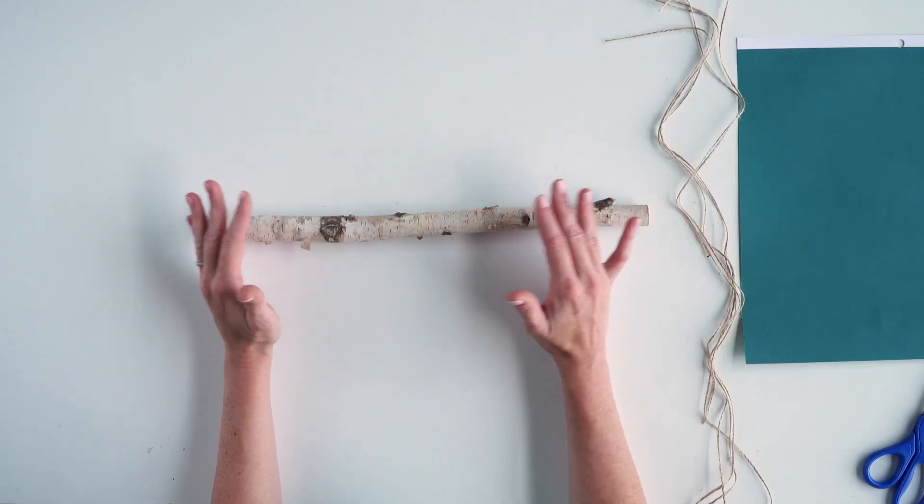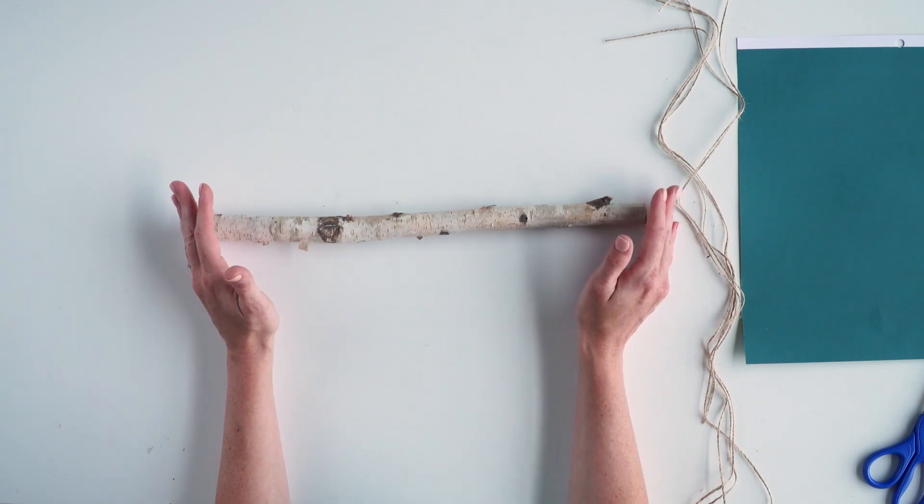So the first thing you'll need is a branch. Depending on your project or where this is going to hang, you might want it a little wider. Today we're going to use a smaller one.